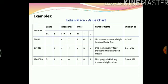I have some more examples for you in the Indian place value chart. The first is a five digit number: the comma is after the last three digits — 548 — and then a comma, then 76, so we read the number as 67,845. The next number is 174315: starting from the extreme right, 315, then 74, then 1, so we read it as 1,74,315. Let's see another example: 3840089. Starting from the extreme right: 089, then 40, then 38 — so in words the number will be 38,40,089.